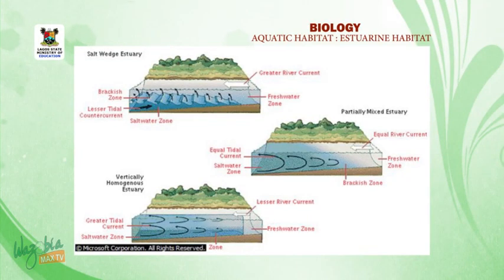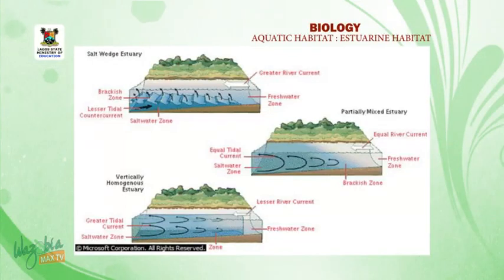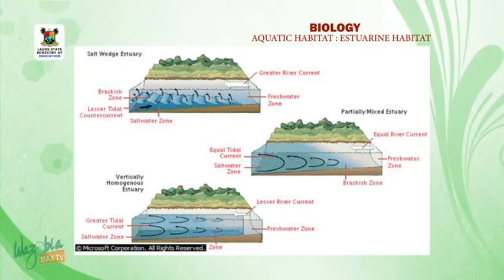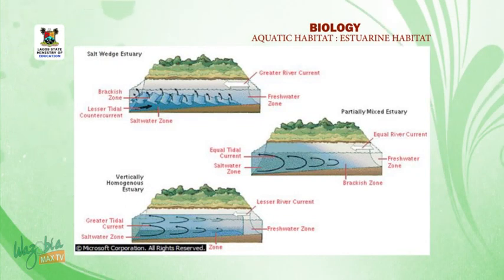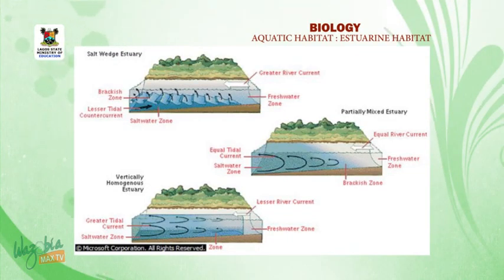A salt wedge estuary, such as the Mississippi Delta, exists where the river current exceeds the tidal current. Where river and tidal currents are equal, such as those in the Chesapeake Bay, a partially mixed estuary is created. Where the tidal range exceeds the freshwater inflow, as in the Bay of Fundy, mixing is more complete and a vertically homogeneous estuary is created.